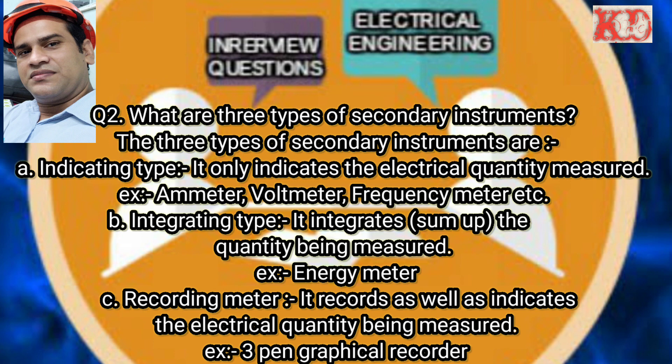Question number two: What are the three types of secondary instruments? The three types are: first, indicating type — it only indicates the electrical quantity measured, example ammeter, voltmeter, frequency meter. Second, integrating type — it integrates or sums the quantity being measured, example energy meter.